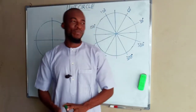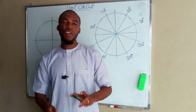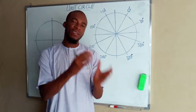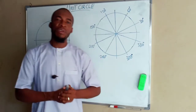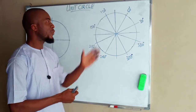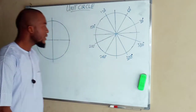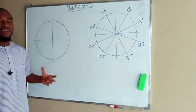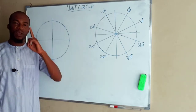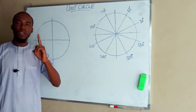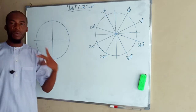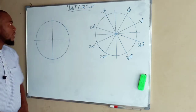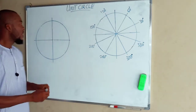Good morning viewers. In today's tutorial we are going to be looking at the basic things that can be derived from a unit circle. A unit circle is a circle that has a radius of a single unit. It could be one kilometer, one centimeter, one meter, but it must be one unit.